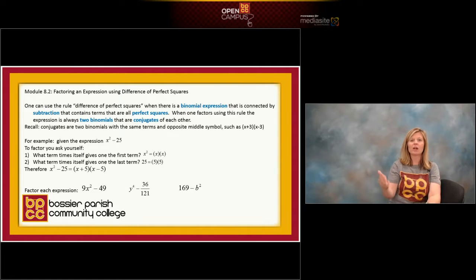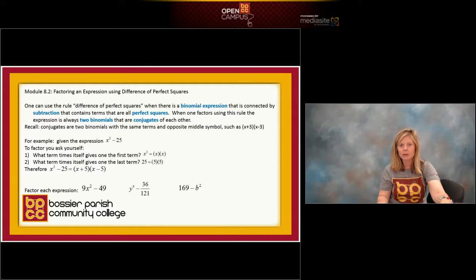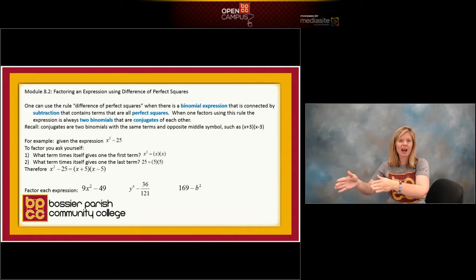Then we go to the last term, 25. Don't worry about the symbol, just worry about the number. What times itself is 25? Well, that would be 5 times 5. So that's what we got our constants 5 and 5.